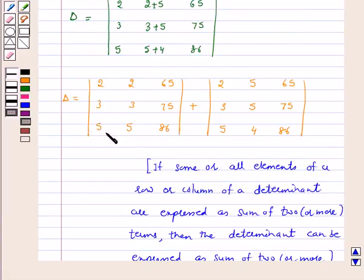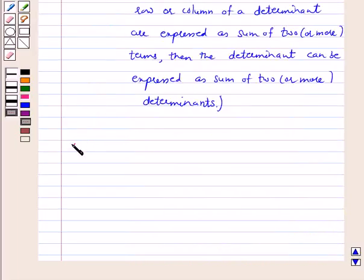Now, this determinant is also equal to 0 because C1 and C2 are identical. If we have a property of a determinant, if any two rows or column of a determinant are identical, that is all corresponding elements are same, then value of the determinant is 0. Therefore, we have delta is equal to 0 plus 2, 5, 6 5.